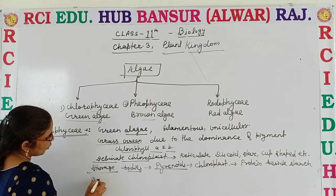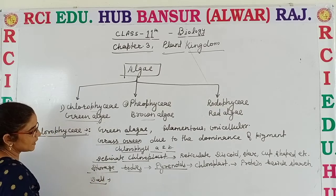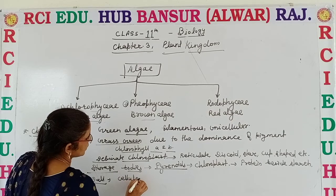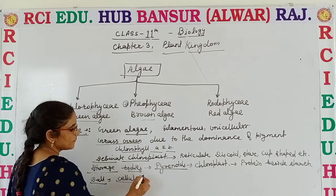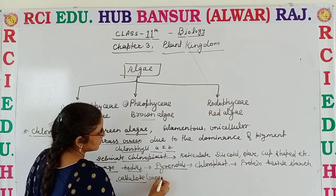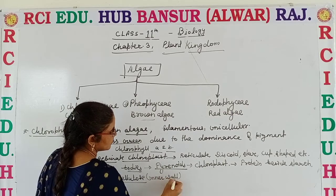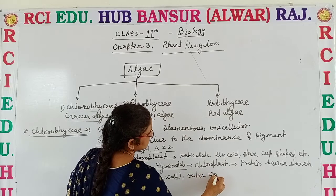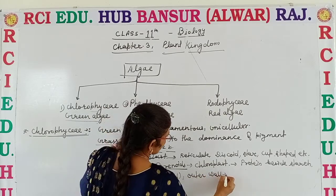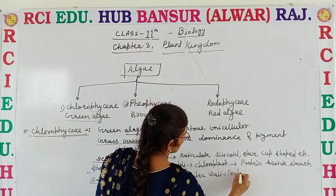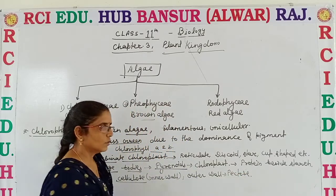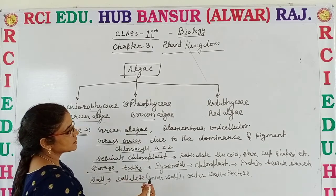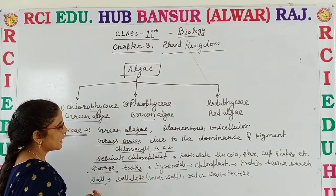The wall of the algae is made of pecto-cellulose. The inner layer is made up of cellulose, whereas the outer layer is made up of pectocellulose.